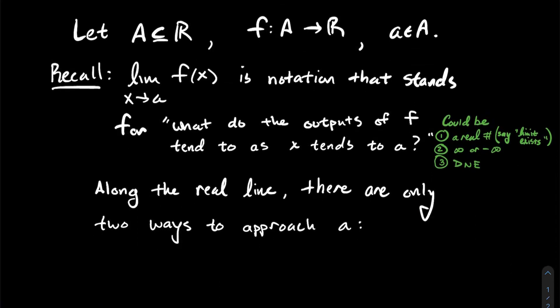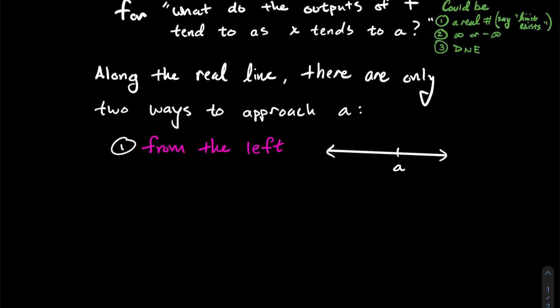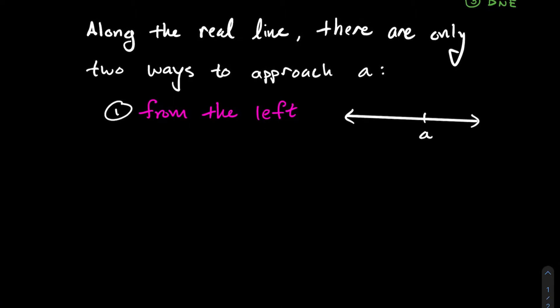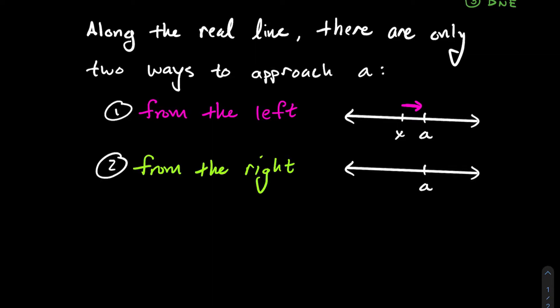Along the real line there are only two ways for my inputs x to actually approach this particular input a. The first way we could approach a is from the left — literally think about x values that are to the left of a, and think about what's going on with my function as the inputs x tend to a from the left. The other possibility is that the inputs tend to a from the right, so literally considering just inputs that are to the right of a.